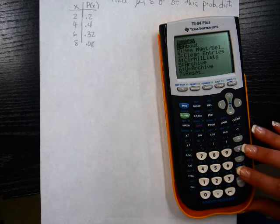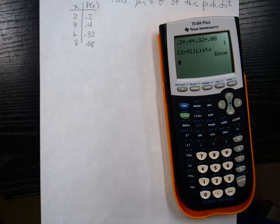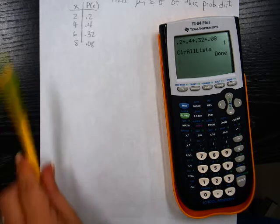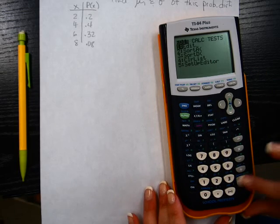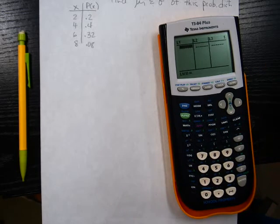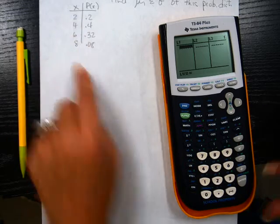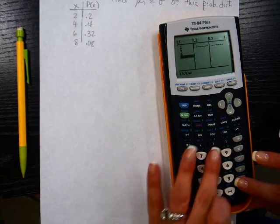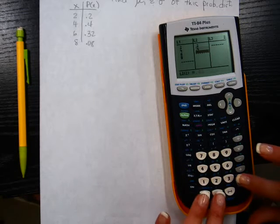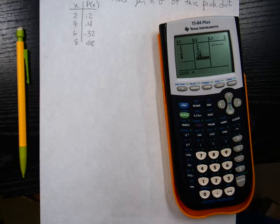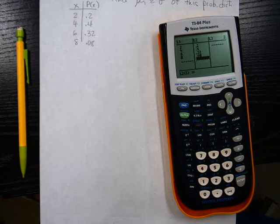So again, I'm going to go in here and push 2nd plus, number 4, and I'm going to clear it out. Again, the calculator that I showed you how to download onto your computer is going to do this for you. So if you don't have a calculator, just download it onto your desktop and you should be able to do all this. You don't have to do anything by hand. So stat, edit, go over to list 1. This goes into list 1. 2, 4, 6, 8. Then list 2, 0.2, 0.4, 0.32, 0.08.